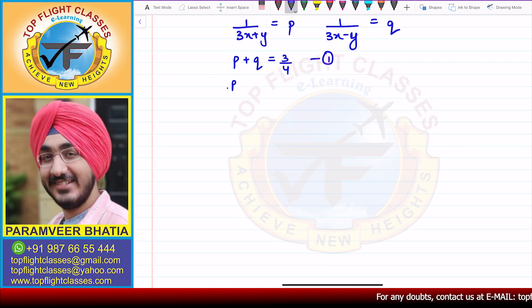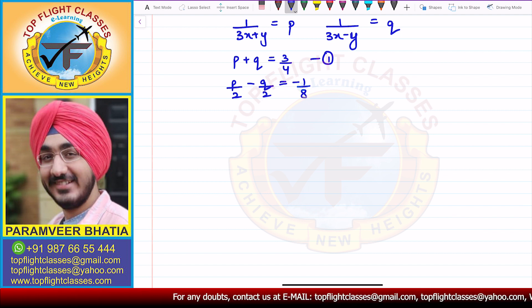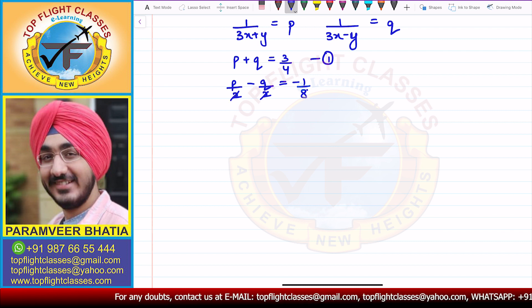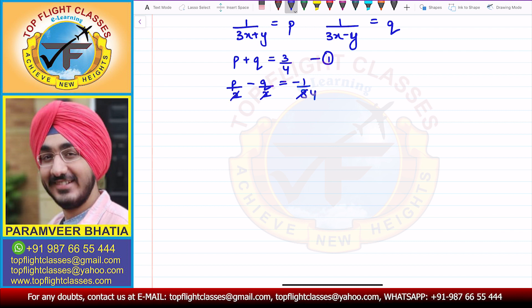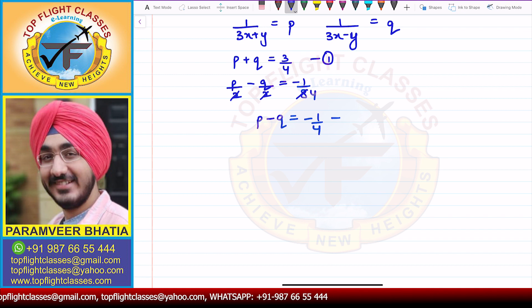From the second equation, substituting p and q, we get p by 2 minus q by 2 is equal to minus 1 by 8. Multiplying through by 2, this gives us p minus q is equal to minus 1 by 4. This is our second equation.